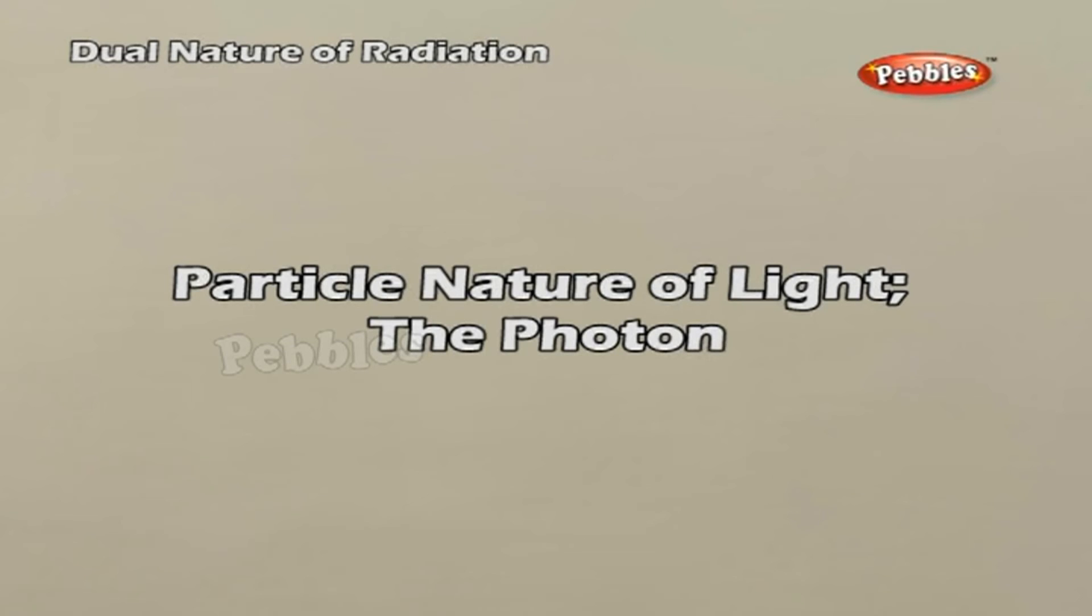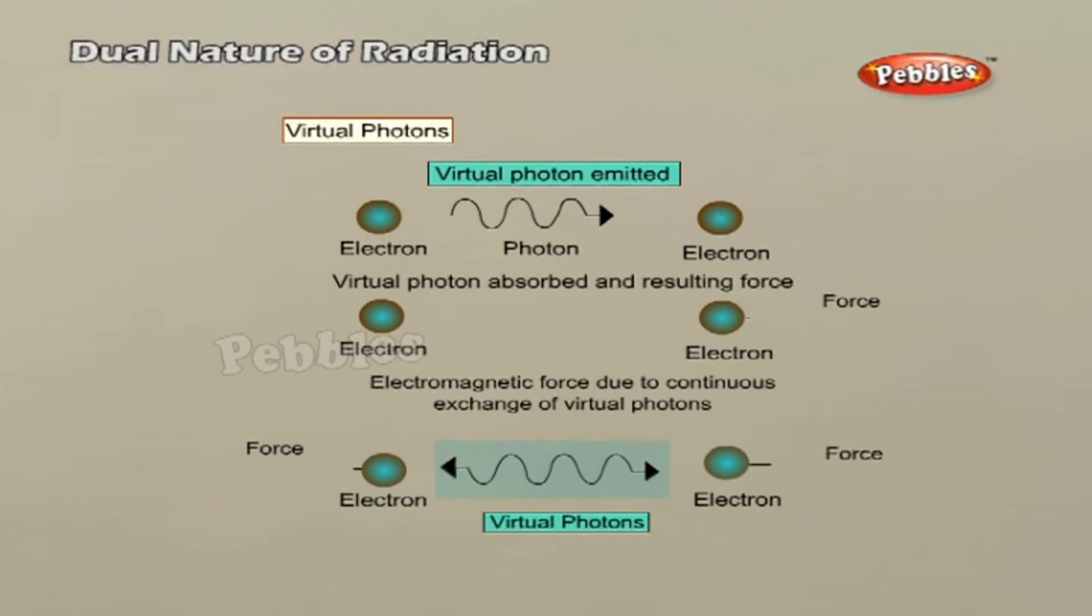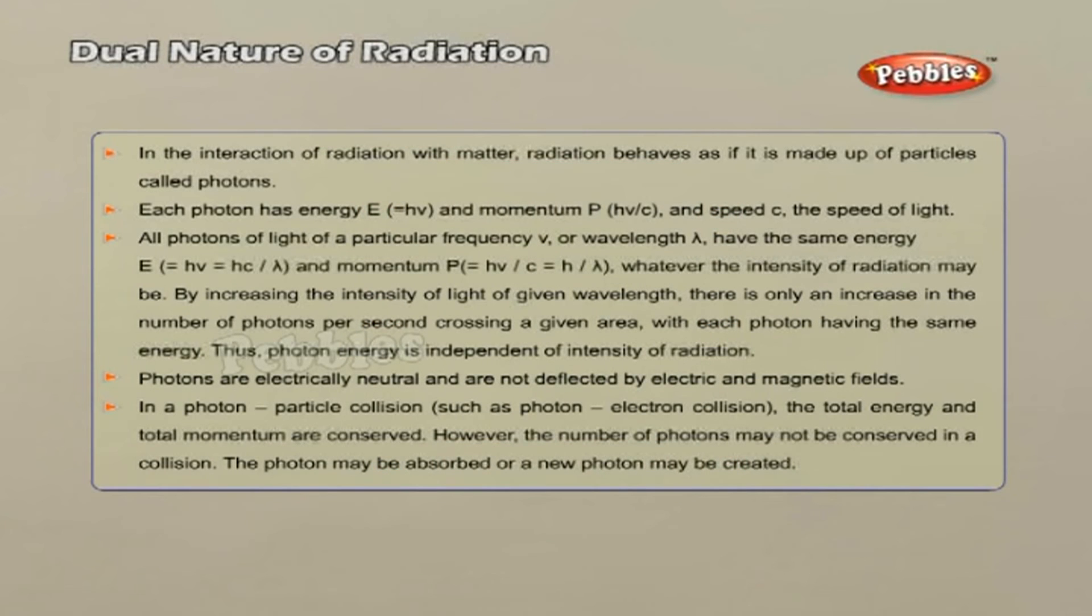Particle nature of light: the photon. In physics and chemistry, wave-particle duality is the concept that all matter exhibits wave-like and particle-like properties. A central concept of quantum mechanics, duality addresses the inadequacy of classic concepts like particle and wave in fully describing the behavior of objects. Through the work of Albert Einstein, Louis de Broglie and many others, current scientific theories hold that all particles also have a wave nature. This phenomenon has been verified not only for elementary particles but also for compound particles like atoms and even molecules. We can summarize the photon picture of electromagnetic radiation as shown above.